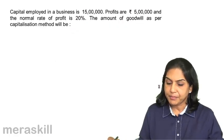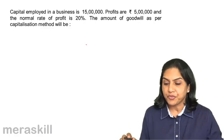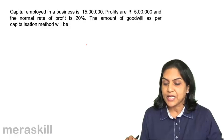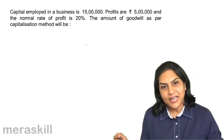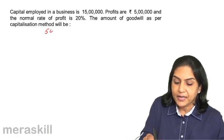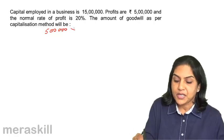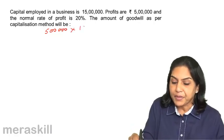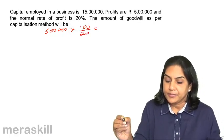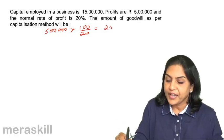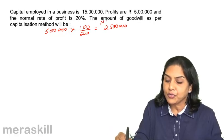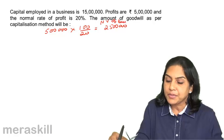Let us take an example. Capital employed in a business is 15 lakhs. Profits are 5 lakhs. Normal rate of return is 20%. The amount of goodwill as per the capitalization method will be: if the profits are 5 lakhs, taking a normal rate of profit of 20%, then 5 into 100 by 20 gives us 25 lakhs. 25 lakhs is the normal value of the business.